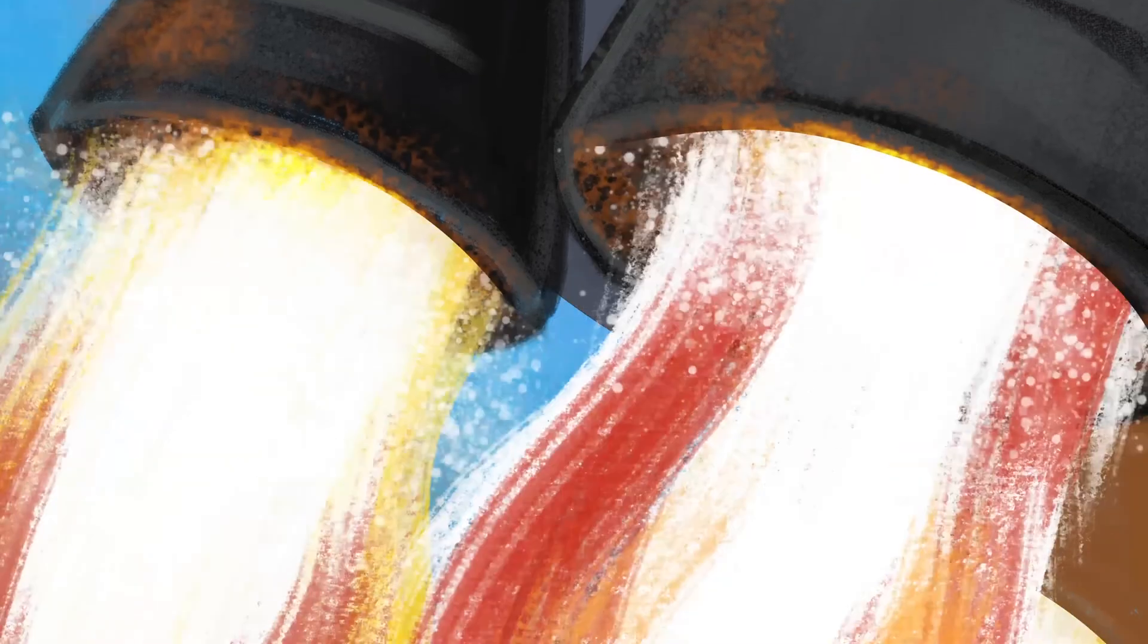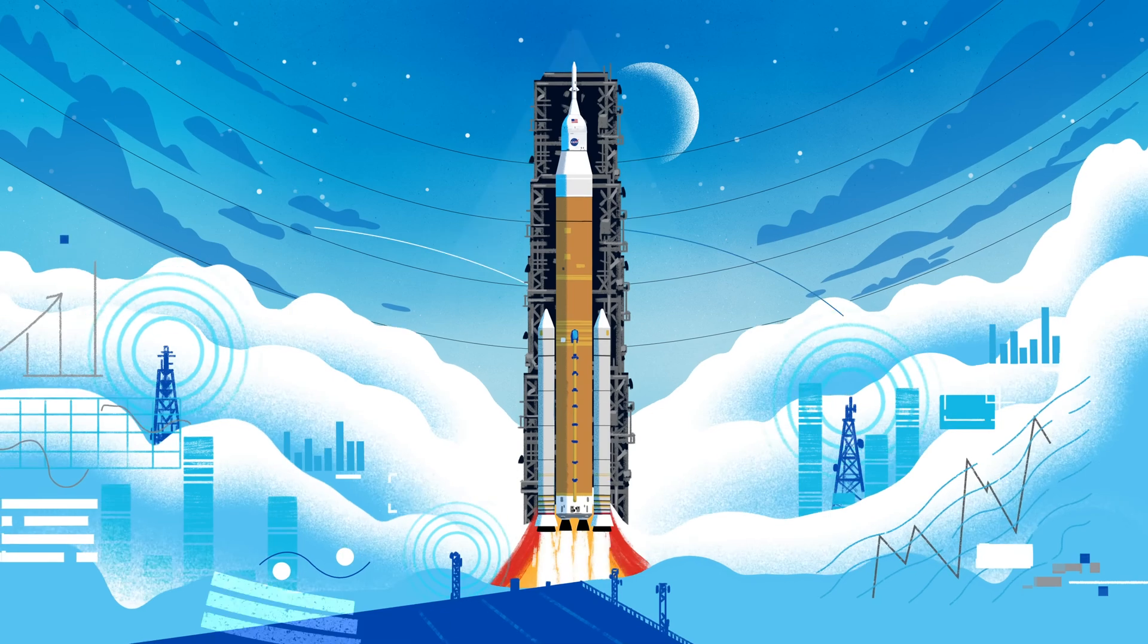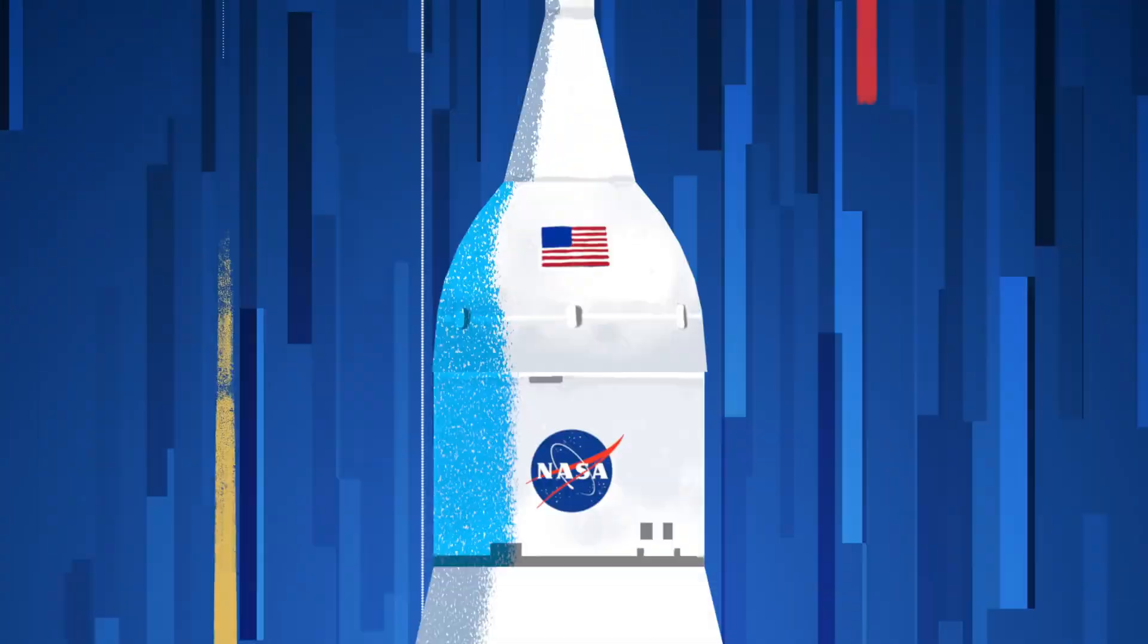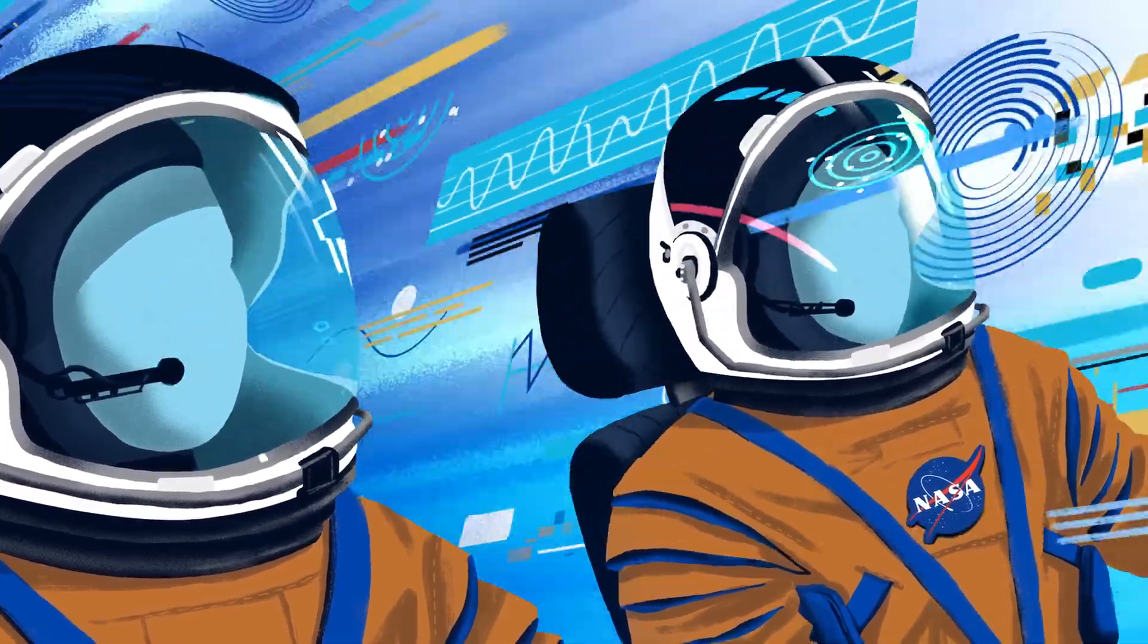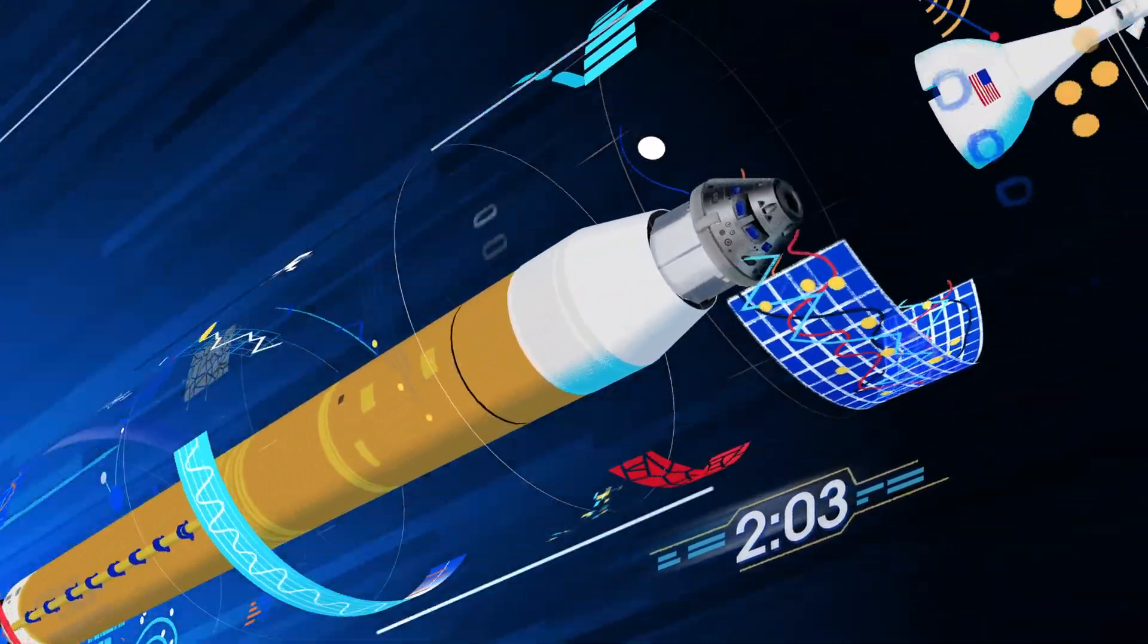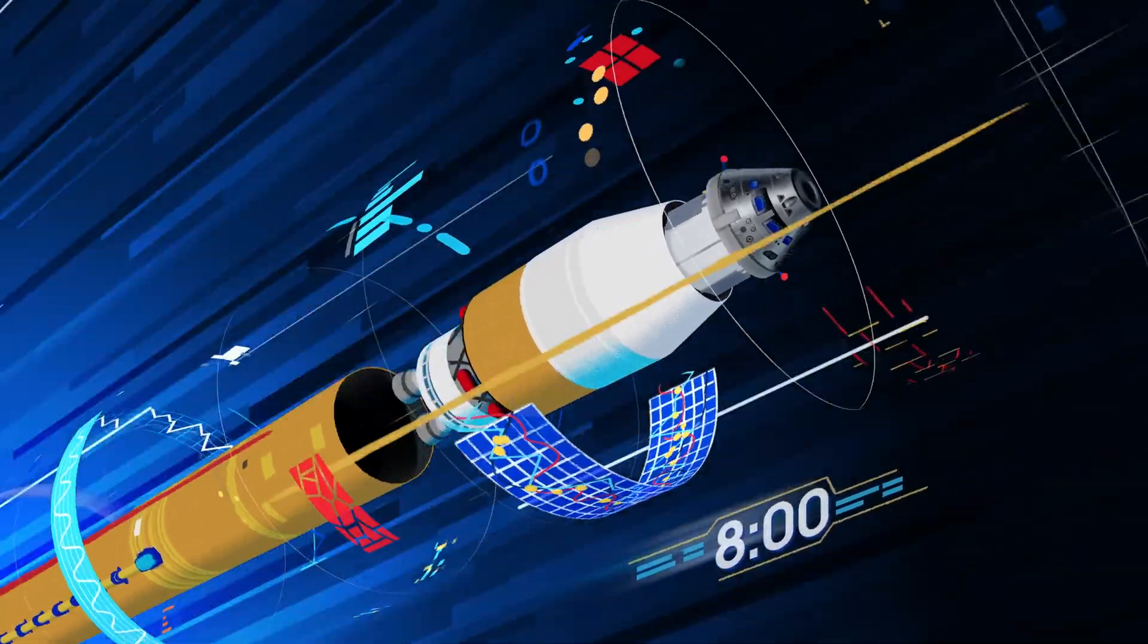Once ignited, there's no stopping what comes next. All four RS-25 engines and the two solid rocket boosters come to life, thundering our crew upwards. Two minutes after ignition, the solid rocket boosters are spent and released. Eight minutes after launch, the core stage is depleted and separated.